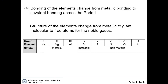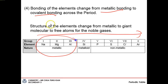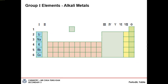The periodic table also tells us the change in bonding across a period. As you go across, bonding changes from metallic bonding to covalent bonding. The first few groups are metals, so metallic bonding; the last few groups are non-metals, so predominantly covalent bonding. In the last group — the noble gases — they don't form bonds with other atoms easily because they already have a stable octet or duplet configuration. They are very stable, so they remain as free atoms.